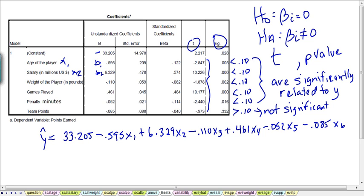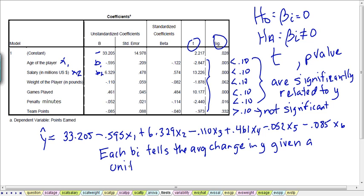When we look at the beta coefficients themselves, each of the beta values tells us the average change we can expect in our dependent variable, y. So the average change in y, given a one unit change in our independent variable, in xi.